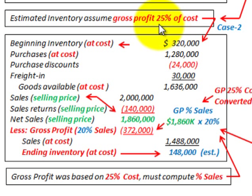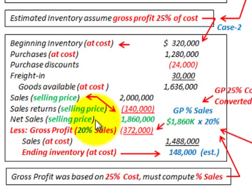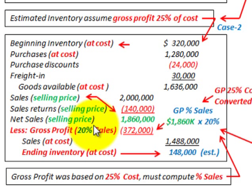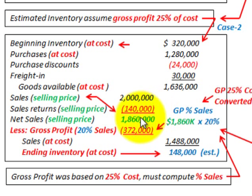In summary, we had two methods: ending inventory using gross profit at 25% of sales gave $241,000, while using 25% of cost gave $148,000. When using gross profit at cost, you must convert it to a percentage of sales to match the selling price basis of net sales. The conversion ensures consistency when applying the gross profit method formula.